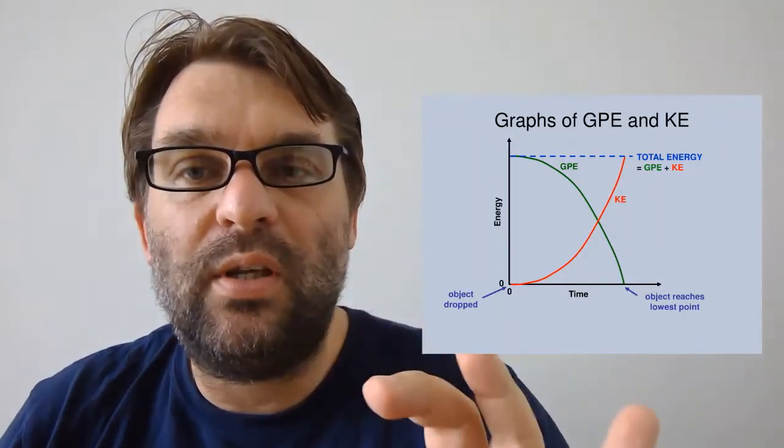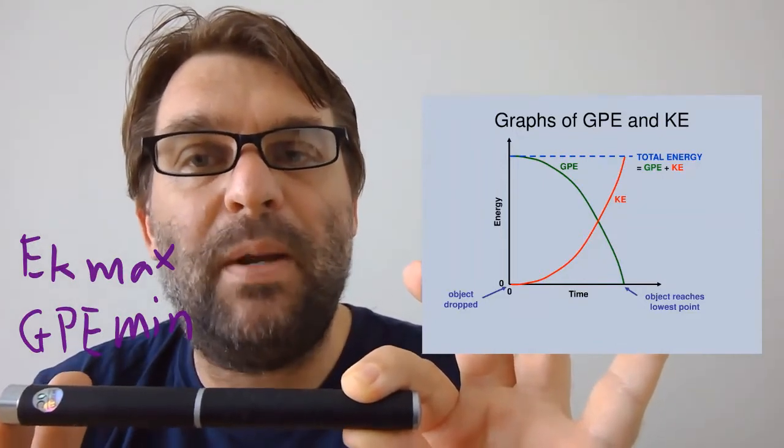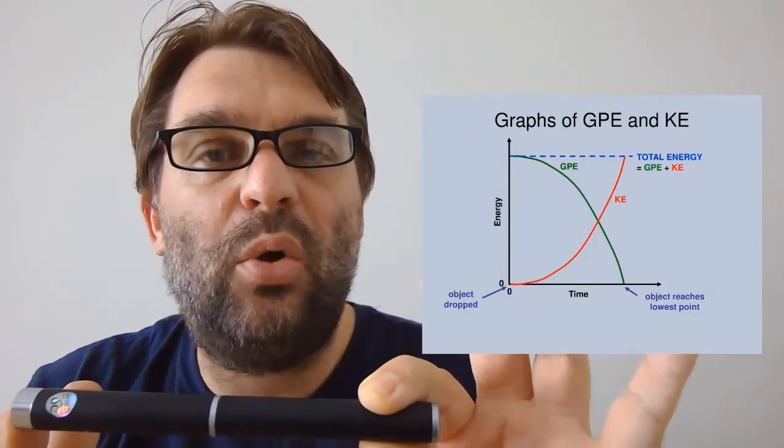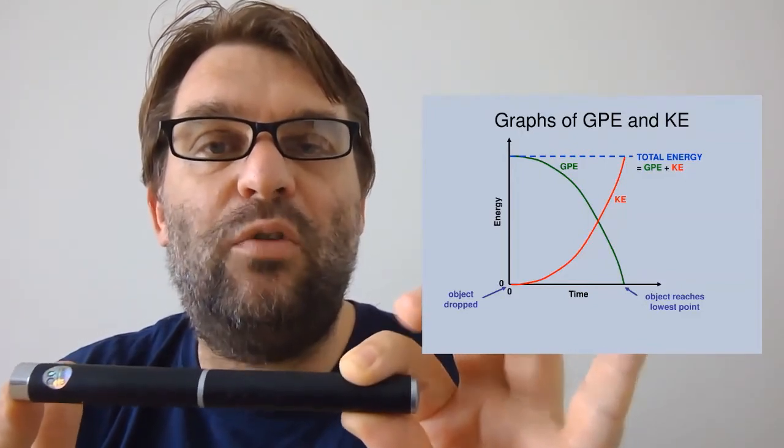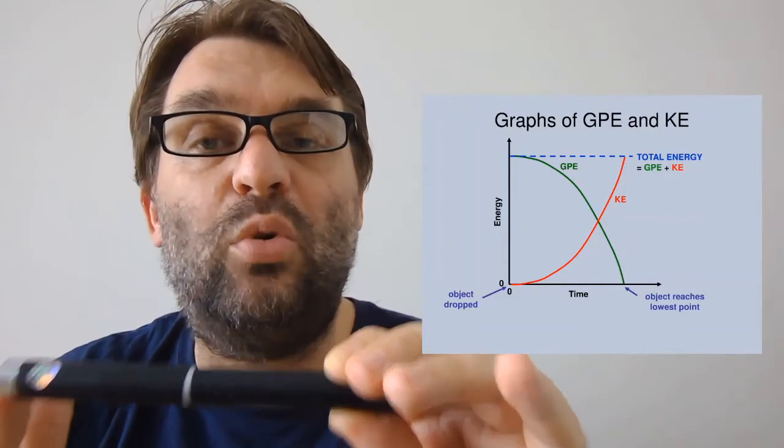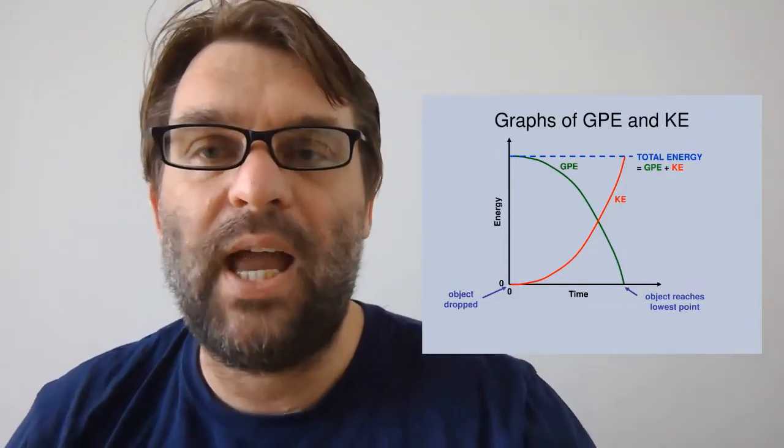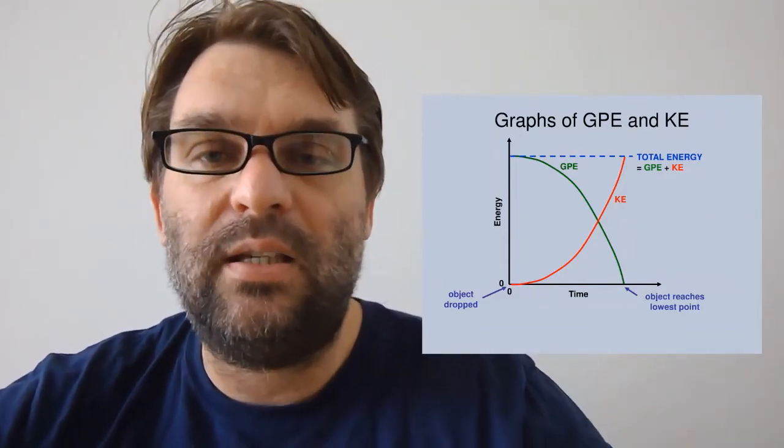And then when it falls, at the bottom, the gravitational potential energy will be a minimum, it will be zero. So as it falls, gravitational potential energy moves towards zero, and kinetic energy moves towards a maximum. And that is today's lesson.